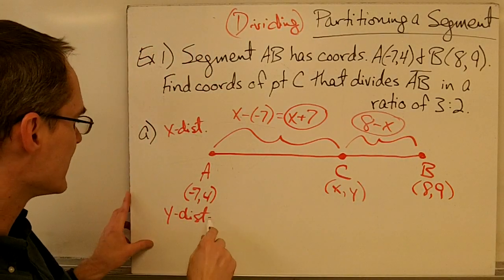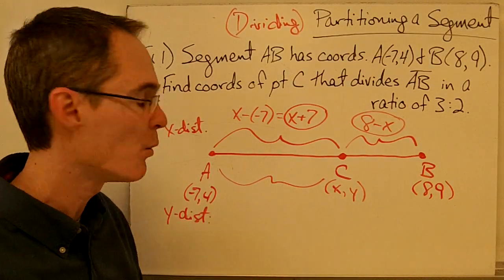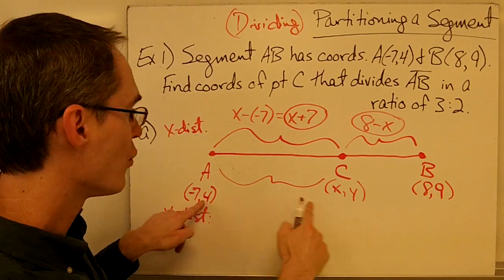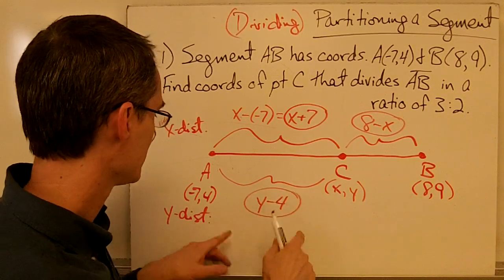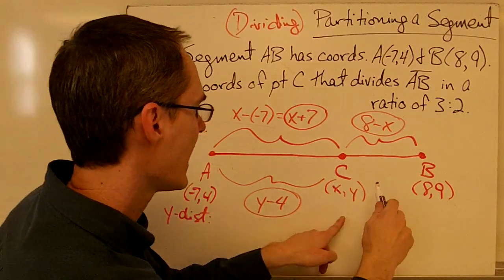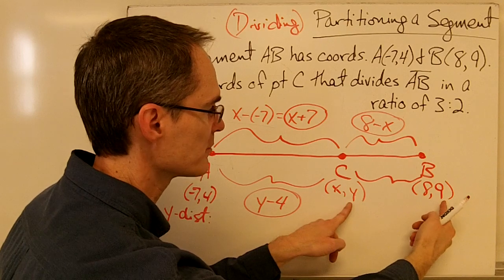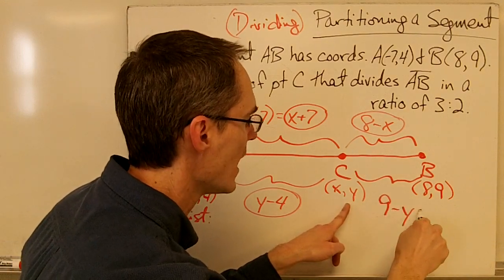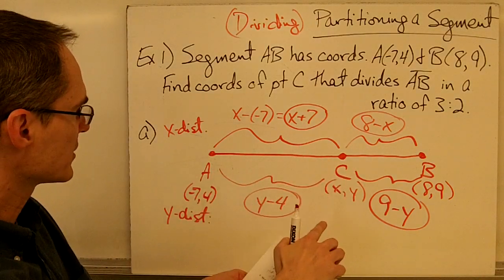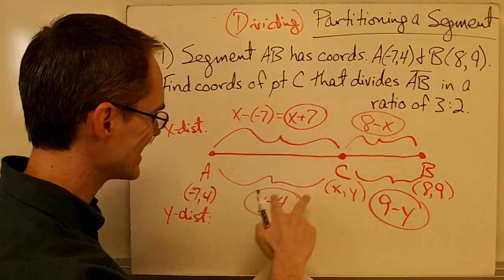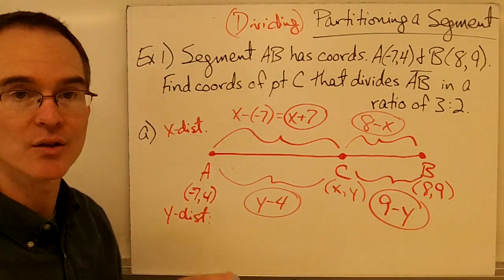Now for the Y distances: the distance from A to C in the Y direction, going from 4 to Y, is Y minus 4. The distance from C to B in the Y direction is 9 minus Y. So that's Part A — I've got my segment drawn and I've got my AC and CB distances in both the X and Y directions.